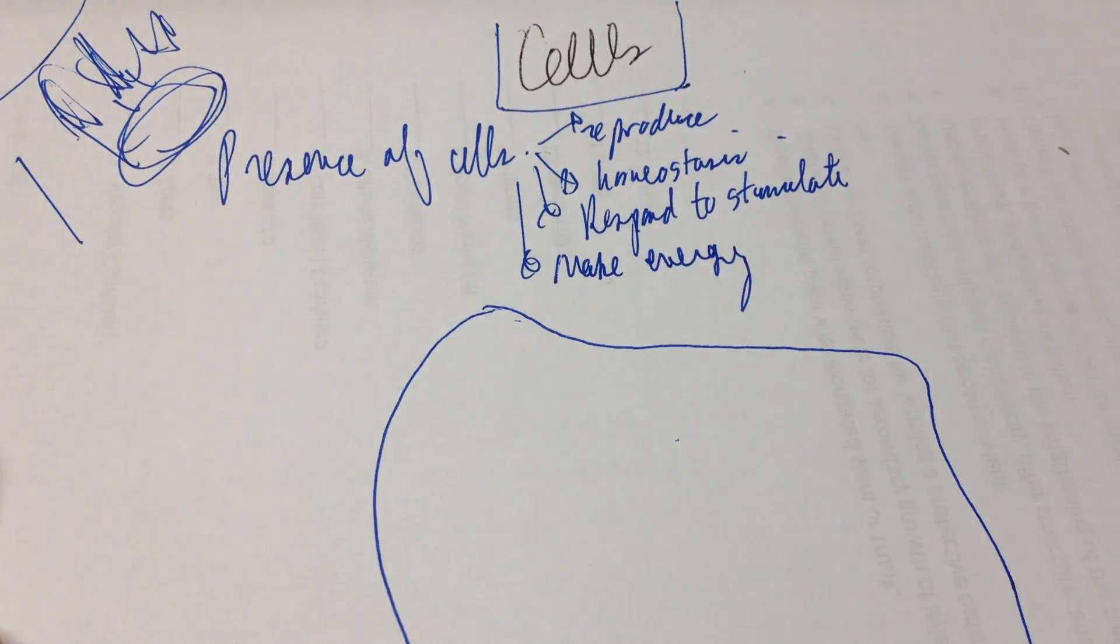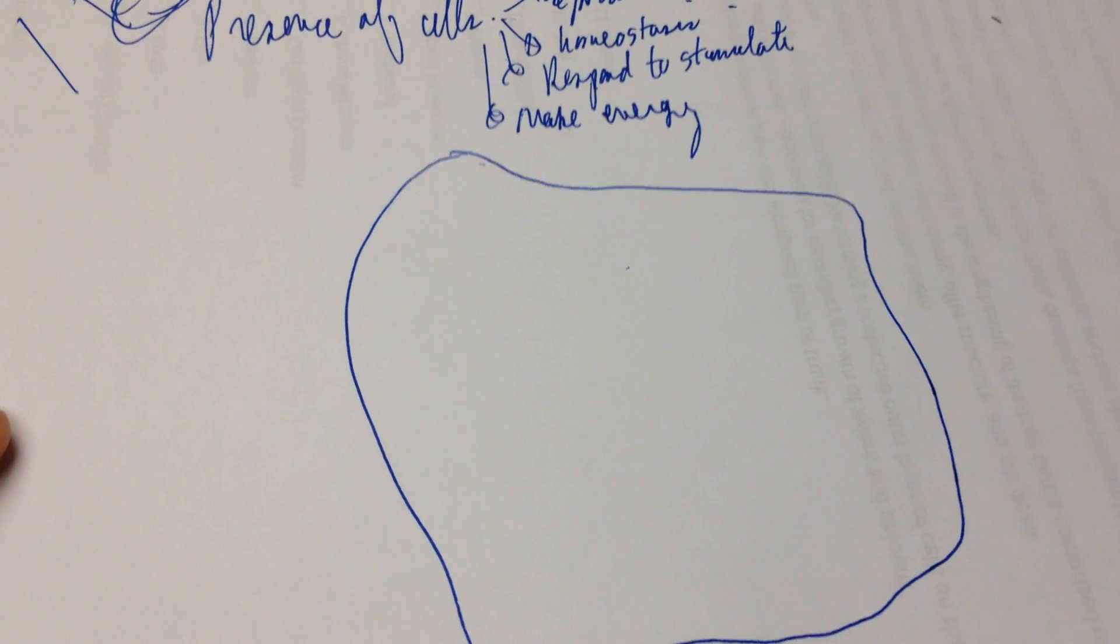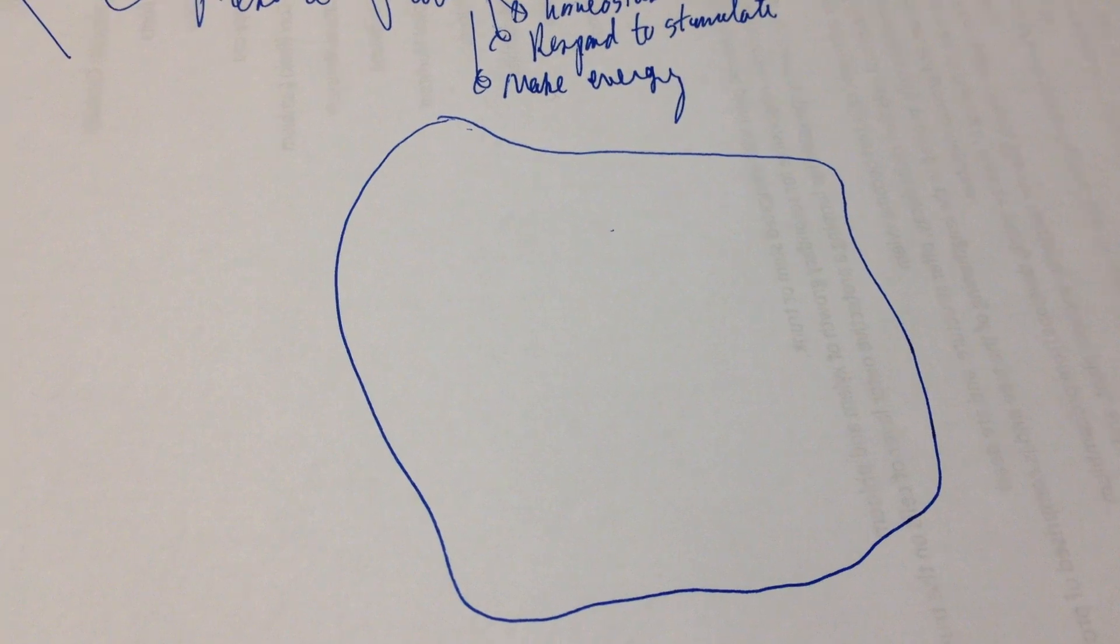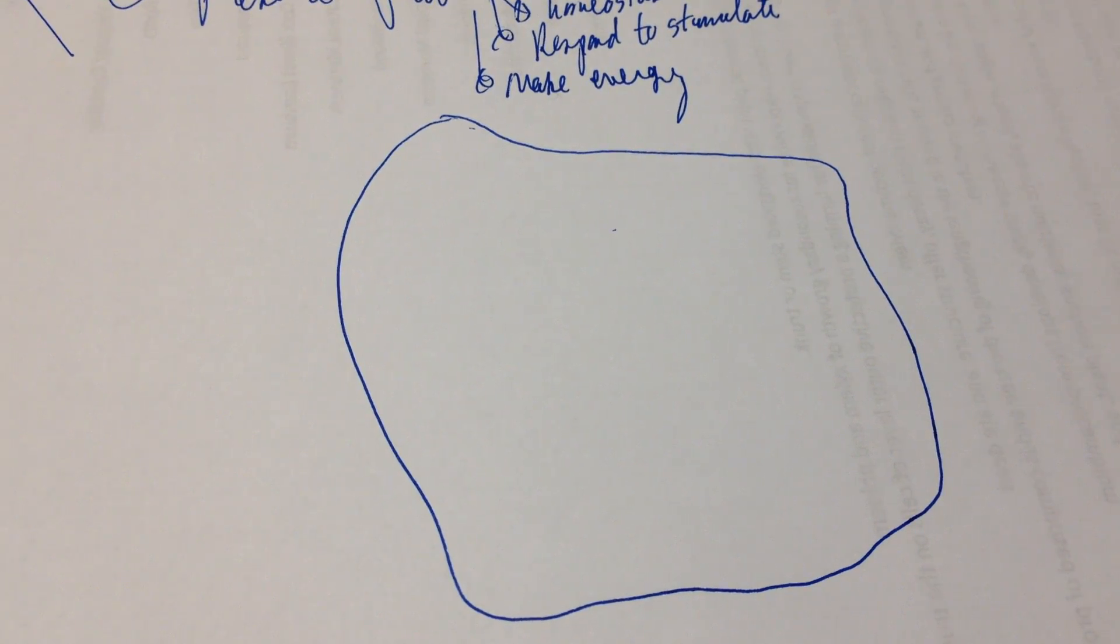So we can kind of draw cells. We have, and this is just my big, ugly, sloppy cell right here.